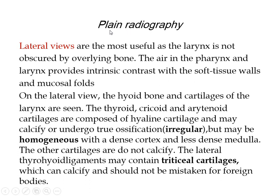Radiology can image the larynx by plain radiography. The lateral view is most useful as the larynx is not obscured by overlying bone. The air of the pharynx and larynx provides intrinsic contrast with the soft tissue walls and mucosal folds. The hyoid bone, thyroid cartilage, cricoid, and arytenoid cartilages are seen on the lateral plain film. These cartilages tend to calcify and sometimes even ossify with age, and the ossification is usually irregular, though it may be homogeneous.